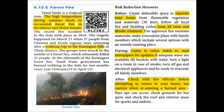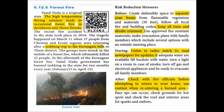Forest fires mostly occur in dry regions and summer seasons, particularly in deciduous and thorn forests. The recent forest fire took place in 2018: on March 11, a group of 37 people from Chennai returning from a trekking trip to Korangani hills in Theni district were caught in the middle of a forest fire, which ultimately killed 23 people. Following this, the government banned trekking in Tamil Nadu for two months every year, from February 15 to April 15.